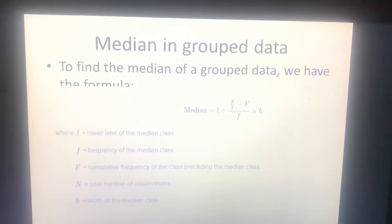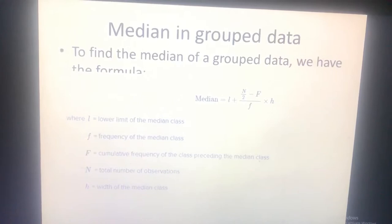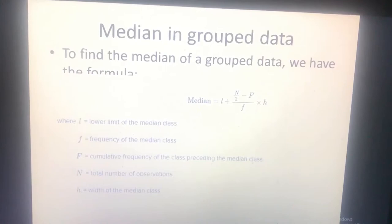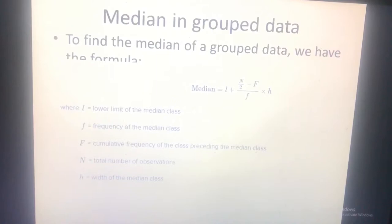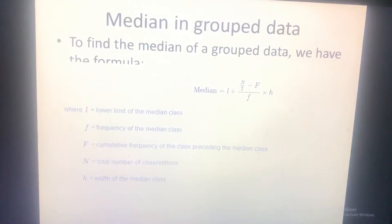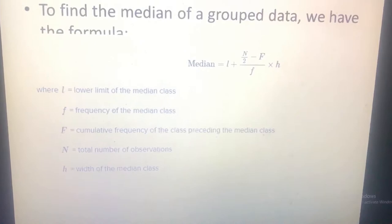Now we calculate the median in grouped data. To find the median, we use the formula: Median equals L plus (n over 2 minus F) divided by f, times h. Here L is the lower limit of the median class, f is the frequency of the median class, F is the cumulative frequency of the class preceding the median class, n is the total number of observations, and h is the width of the median class.